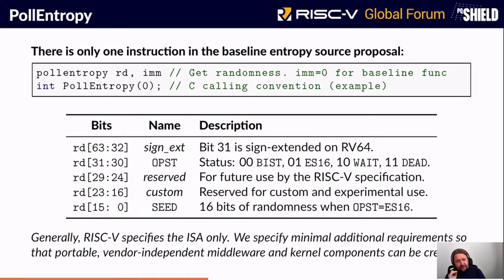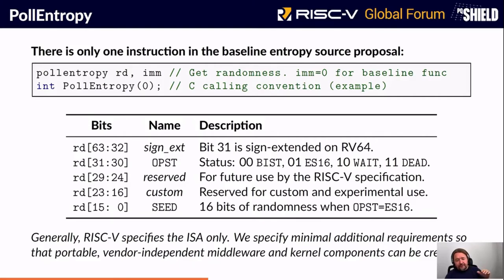This is only one instruction. We have a baseline specification for immediate zero, but may add new features in the future. There is a 32-bit output, sign-extended. The high two bits are a state indicator — basically an operational status. Then there are some reserved and custom bits, and then 16 bits of randomness. Only 16 bits come out when you have operational state ES16. We need to specify minimal requirements in order to have vendor-independent middleware and kernel components between implementations — that's why we need a minimum requirements set for seeding and operation of this interface.